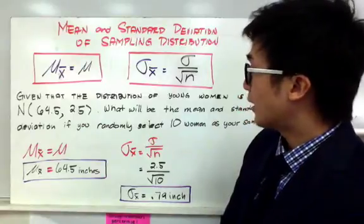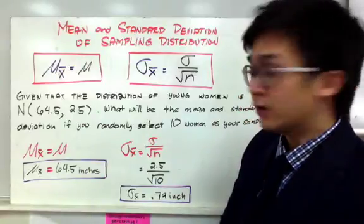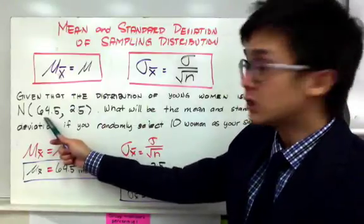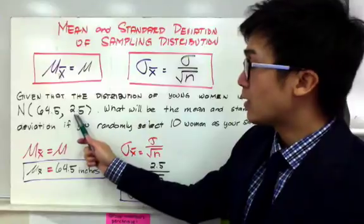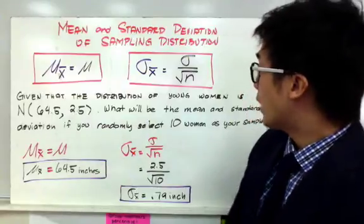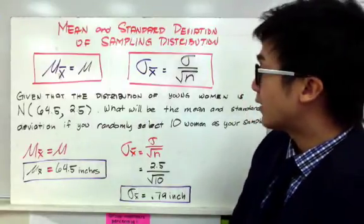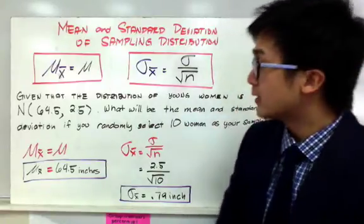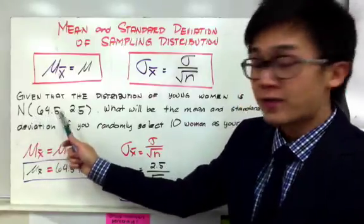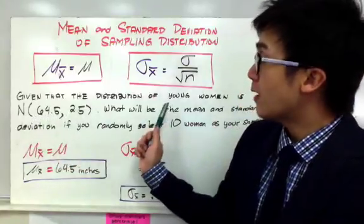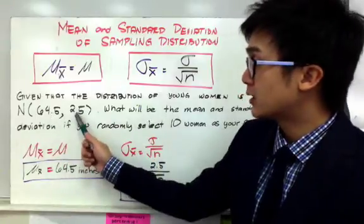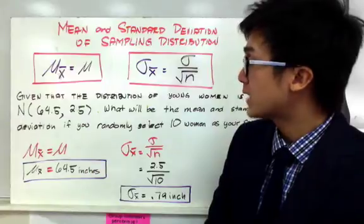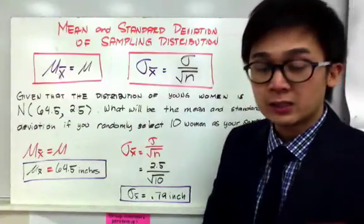Let's use these two formulas in finding the mean and standard deviation for this example. We have a given distribution of the height of young women, where the population mean is 64.5 and the population standard deviation is 2.5. What will be the mean and standard deviation if you randomly select 10 women as your sample?